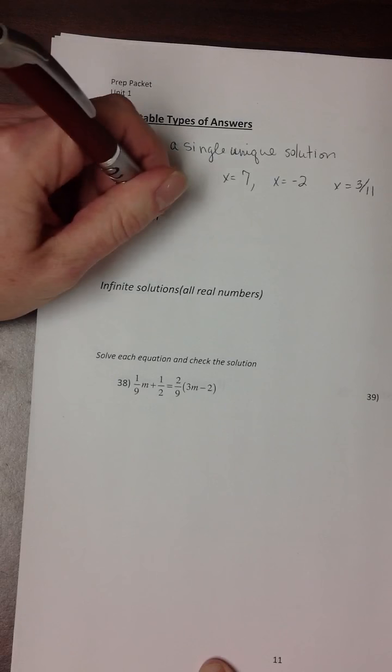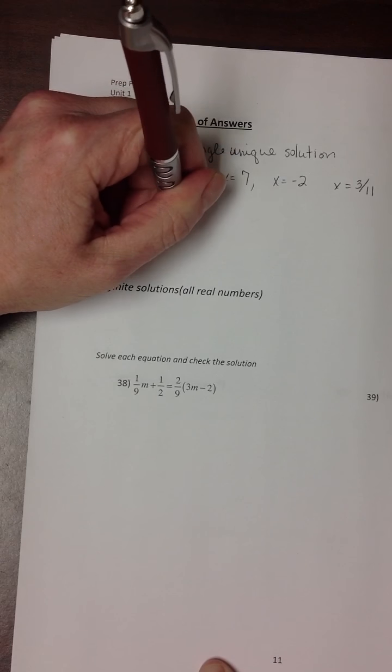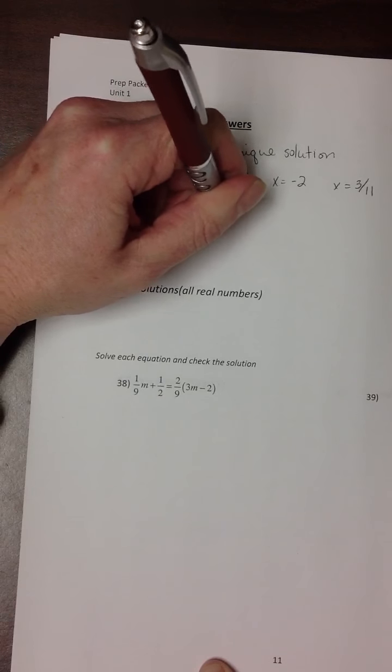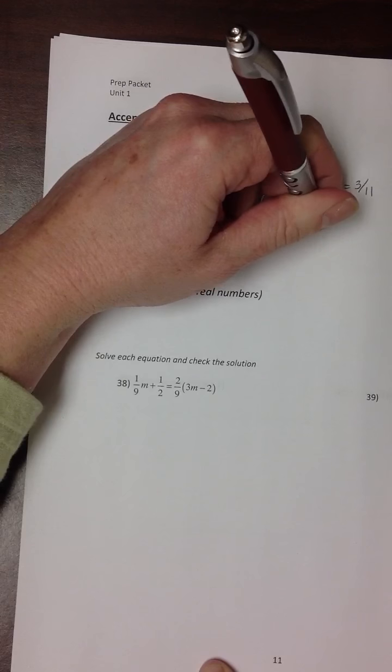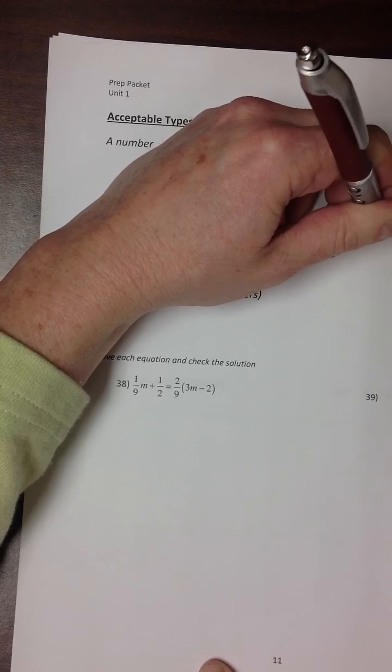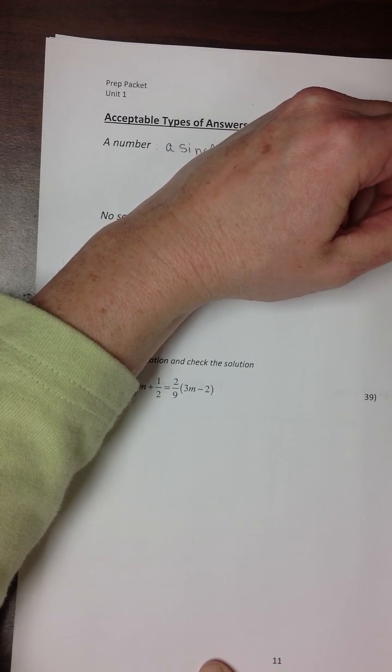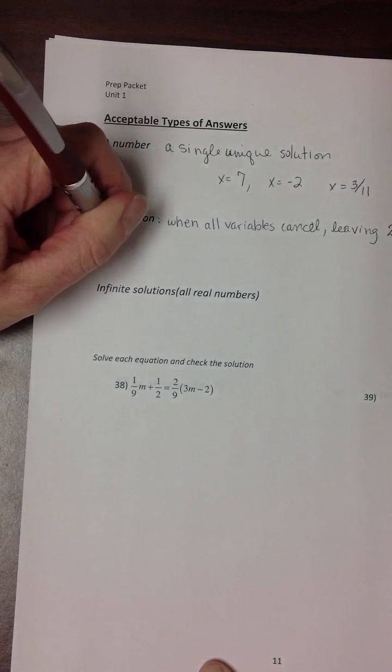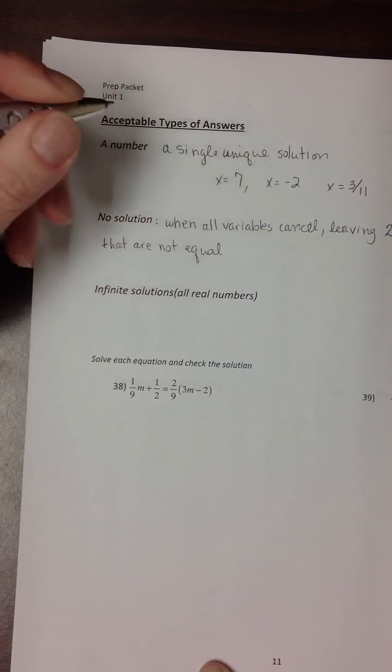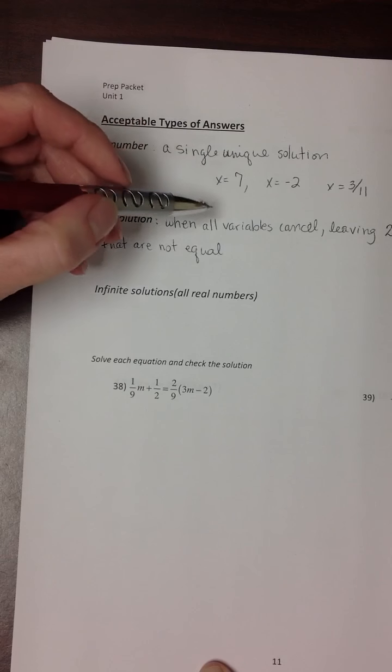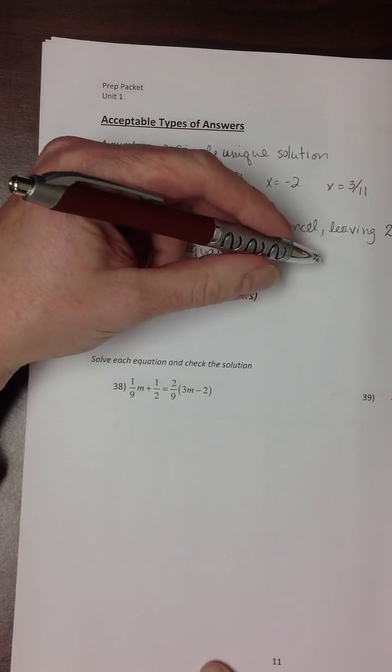Sometimes there is no solution. What does that look like when you're solving it? When all the variable terms drop out, leaving two numbers that are not equal, we say there is no solution—because there's no number you can put in place of x that will make 7 equal to negative 3.